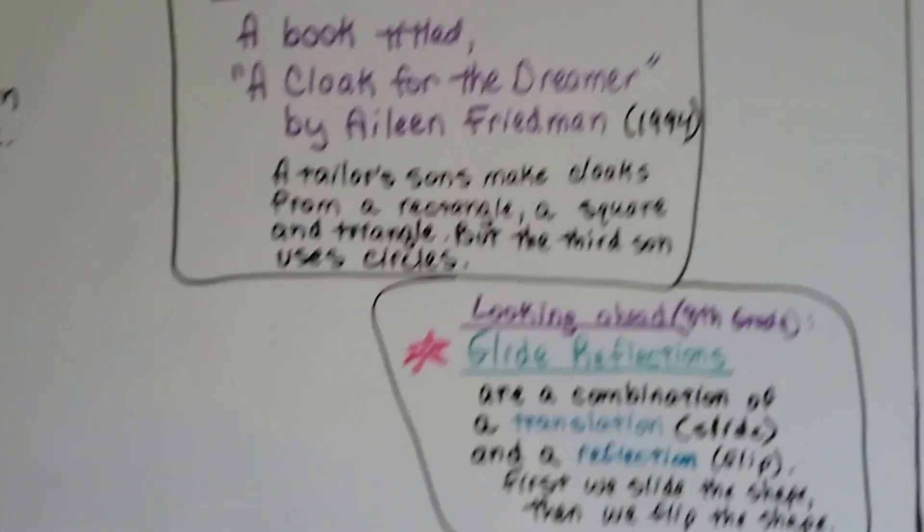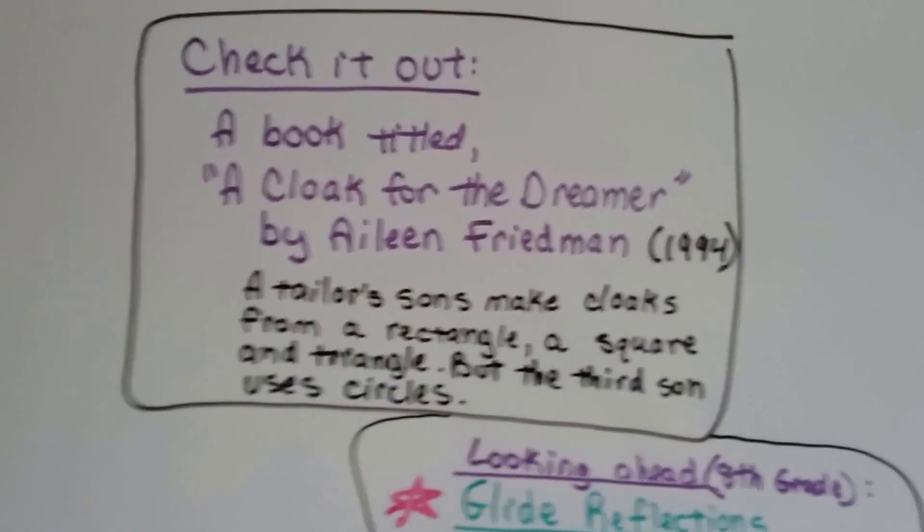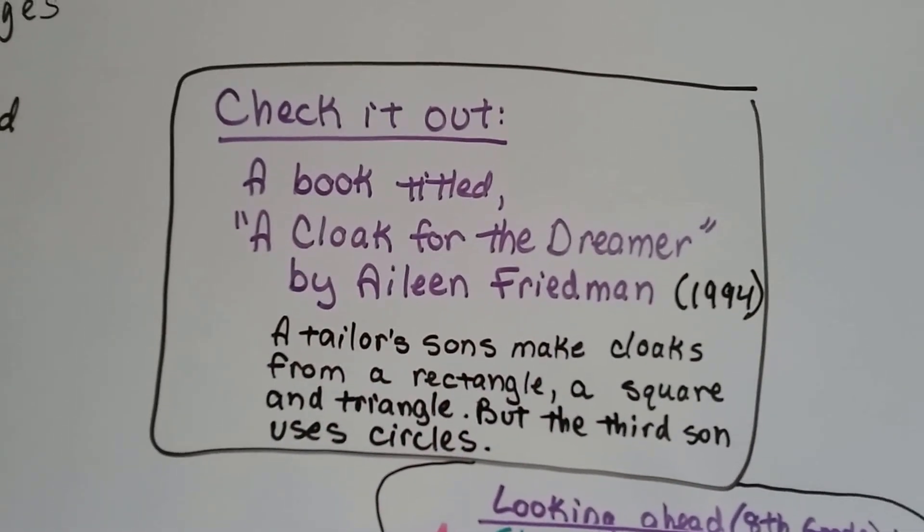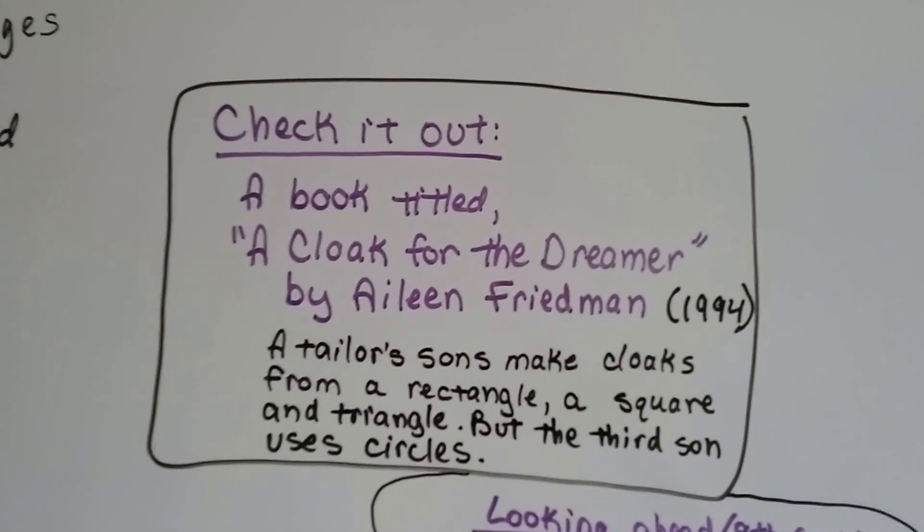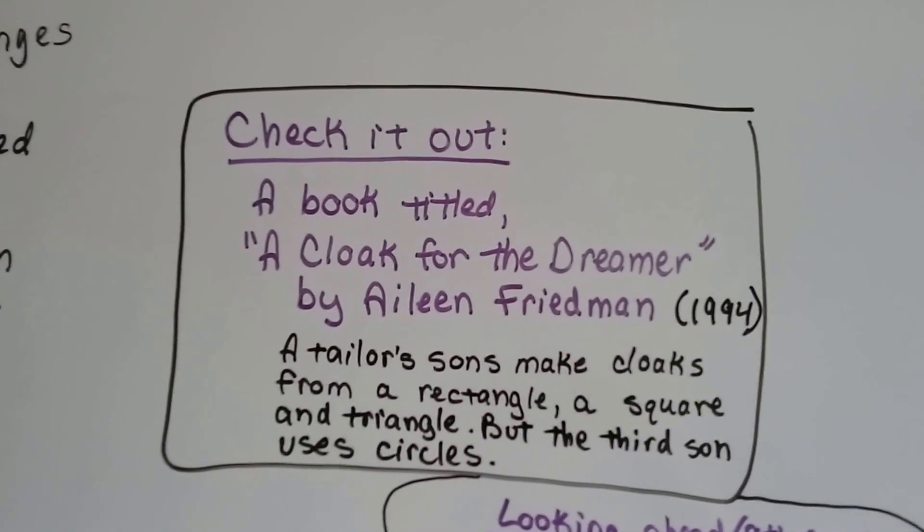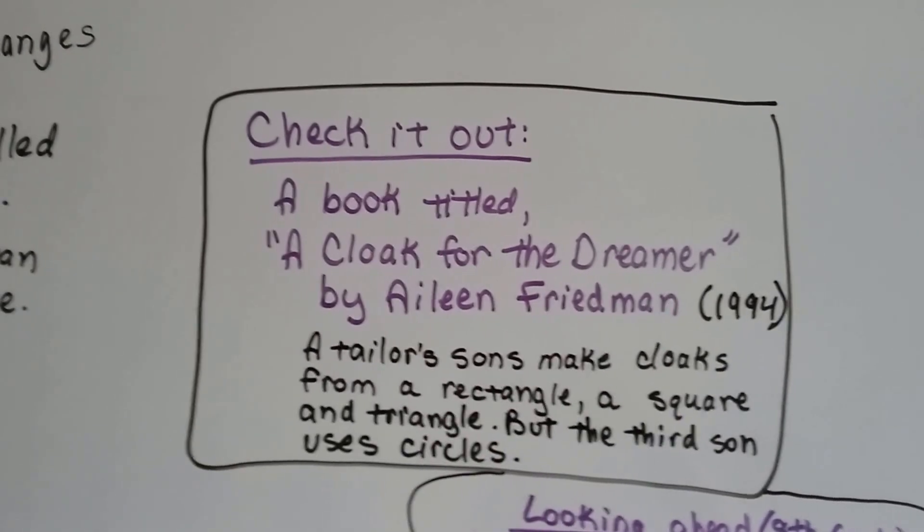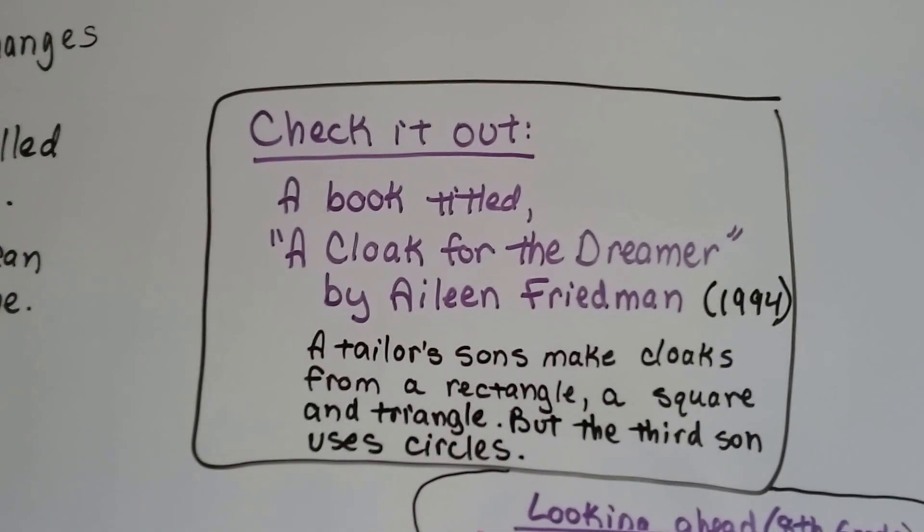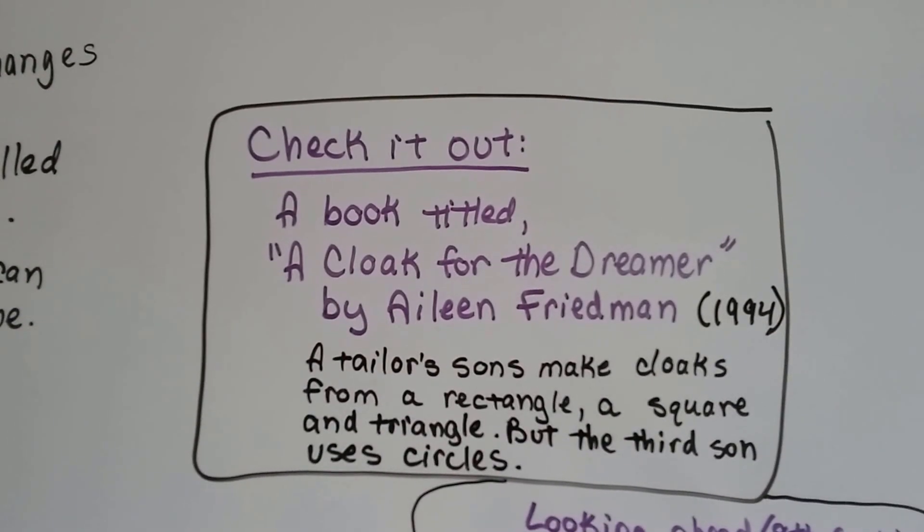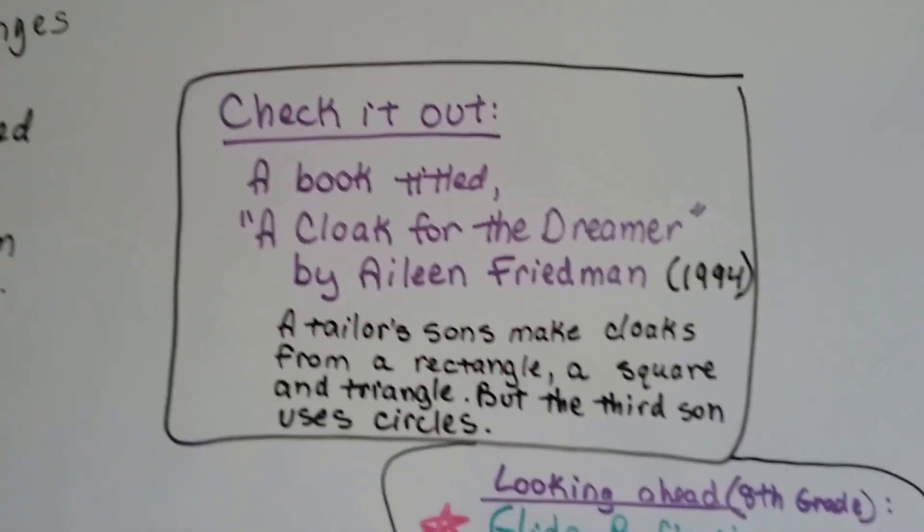Alright, so here's what I want you to check out. There's a book titled, A Cloak for the Dreamer, and it's by Alien Friedman, and it was written in 1994. It's about a tailor of sons making cloaks from a rectangle and a square and a triangle, and the third son uses circles. Really cute book. Check it out. It really explains what we're talking about here with transformations and slides and turns and flips.